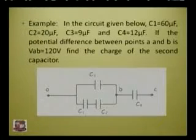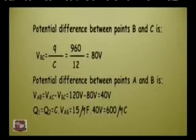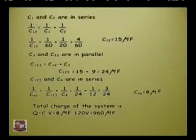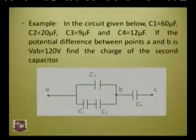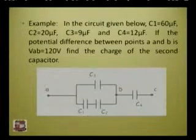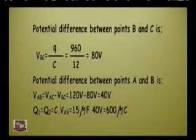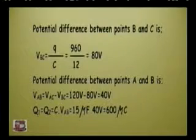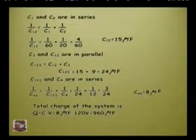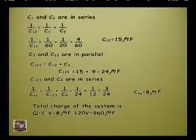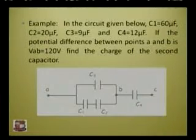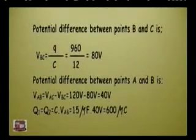Now how to calculate the potential difference between B and C: if we know the entire potential difference V_AC, we can subtract V_BC from it. The potential difference between B and C: V_BC = Q/C = 960 microcoulombs / 12 microfarad = 80 volts.